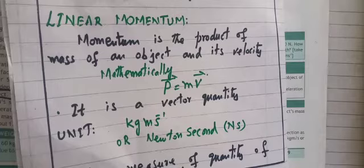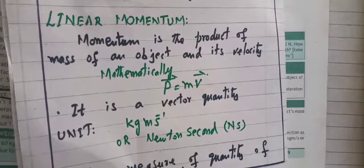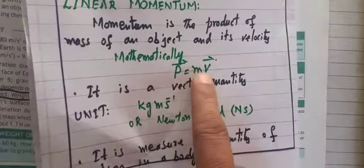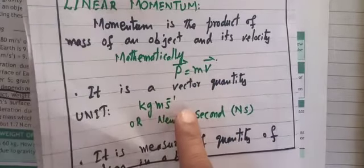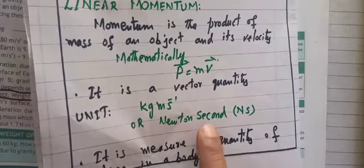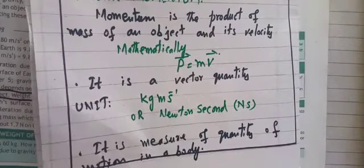Now what is the unit of momentum? Combine the units of m and v: m is in kilograms and v is in meters per second, so the unit becomes kilogram·meter per second (kg·m/s). This can also be written as Newton·second (N·s). So momentum is a measure of the quantity of motion in a body.